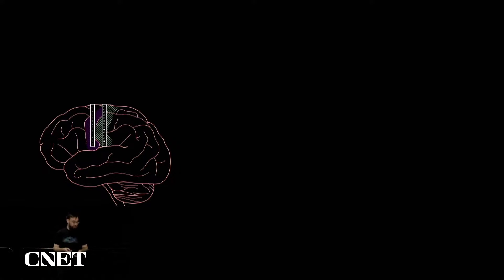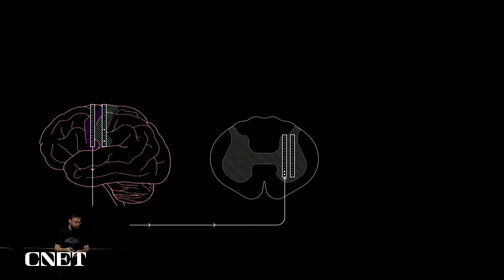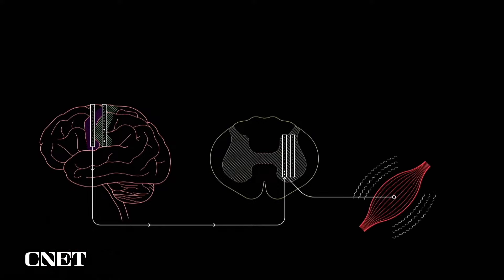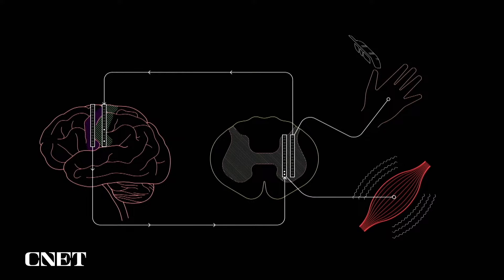Putting those two loops together: we have motor intentions decoded from the brain used to stimulate the spinal cord, causing movement, and then the sensory consequences of those actions being recorded in the spinal cord to stimulate the brain, causing perception.